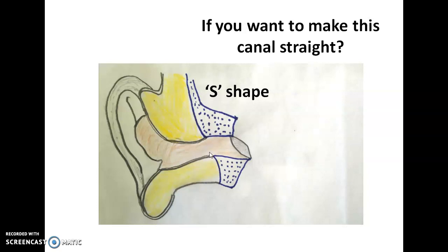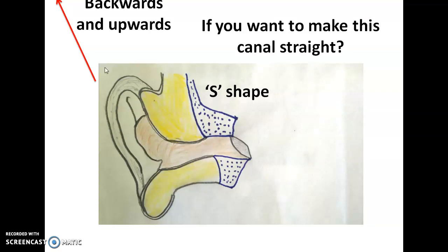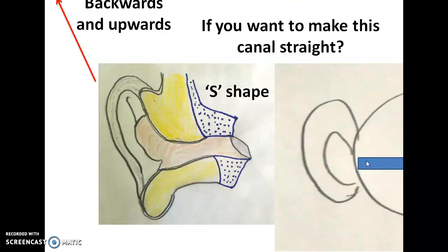To visualize or straighten the external auditory canal — for example to clear wax — you must pull the ear upwards and slightly backwards. Pulling downwards makes the curve more oblique, not straight. This is what our grandparents used to do: pull the ear backwards and upwards to make the canal straight. Nature actually inclines the canal so that wax comes out on its own, so manual removal with cotton buds is not necessary.